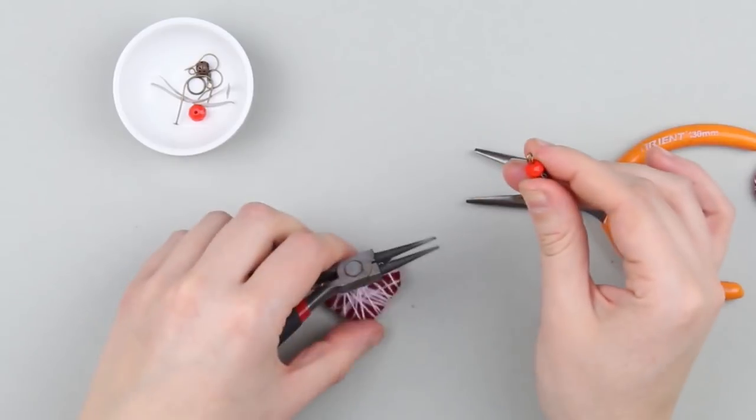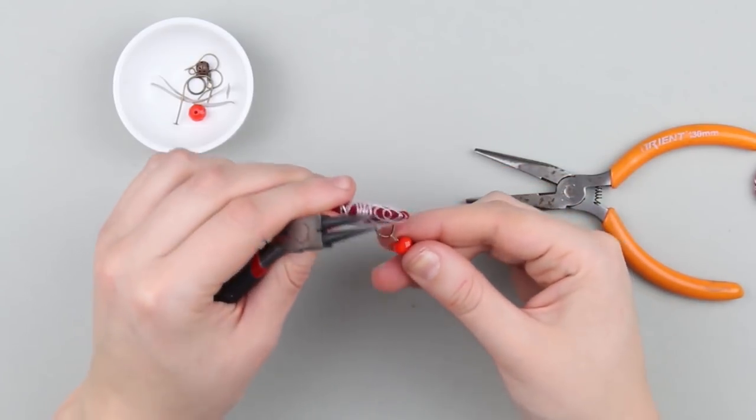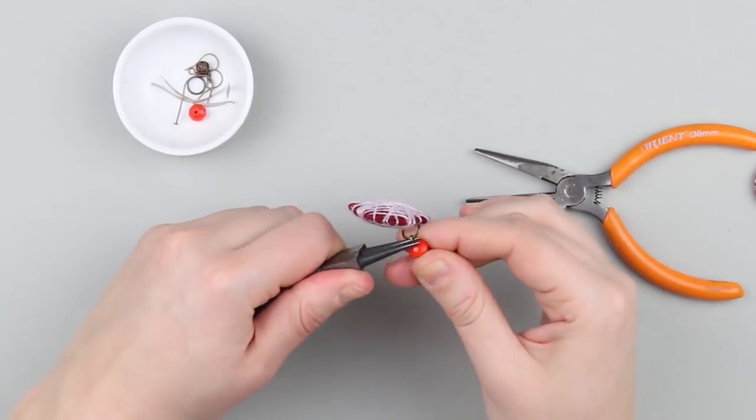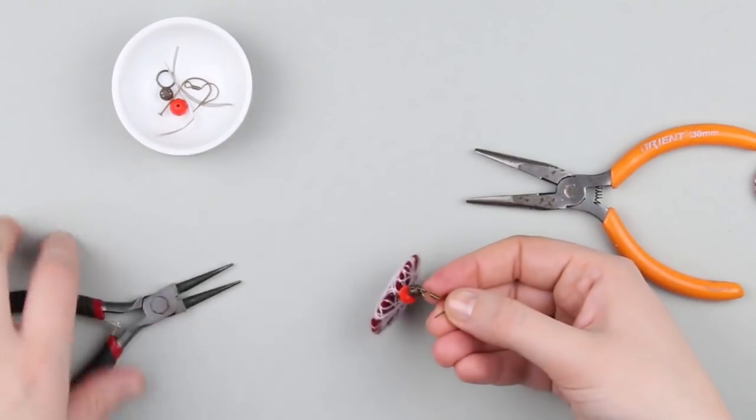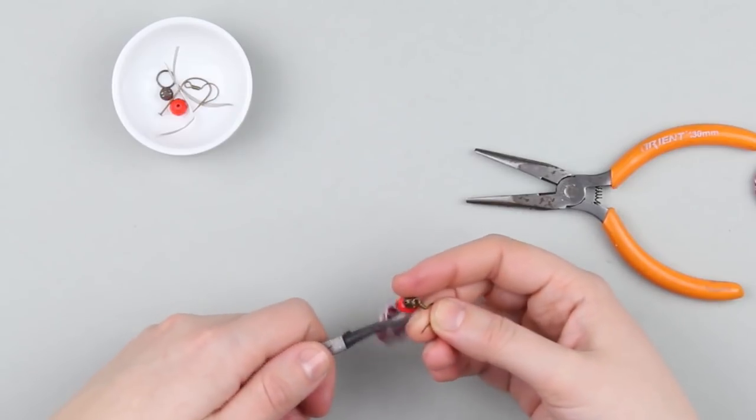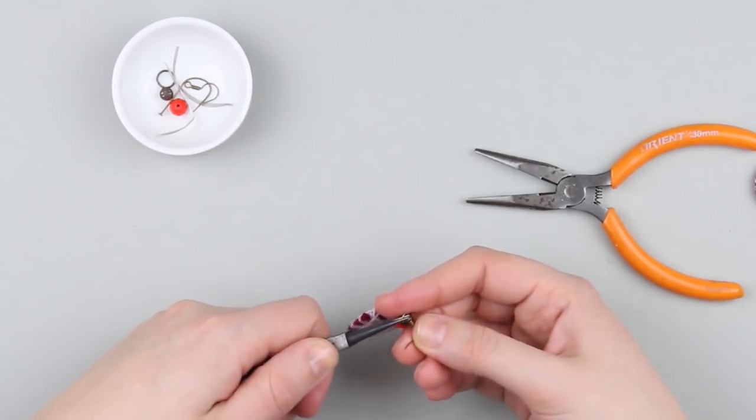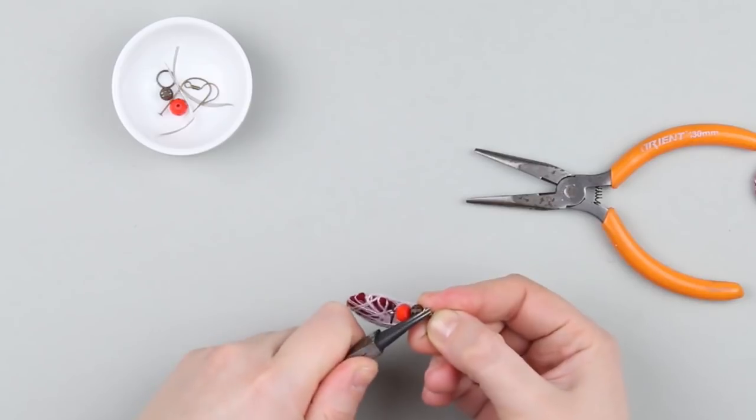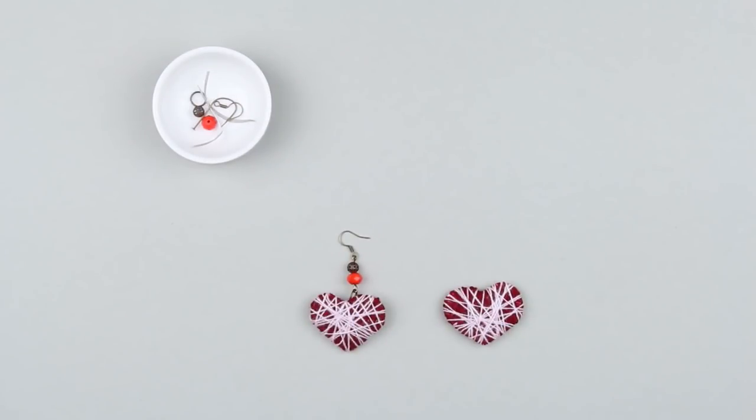Open the loop and hook the beads. You should attach the clasp now. Make the same beaded clasp on the other earring.